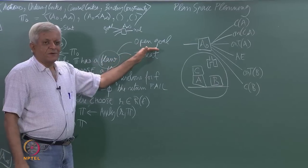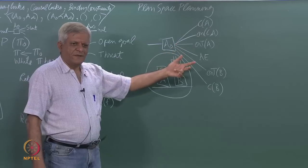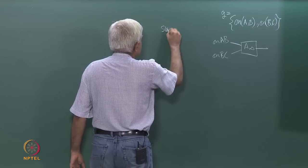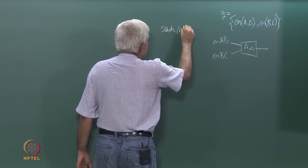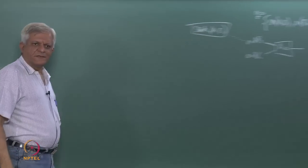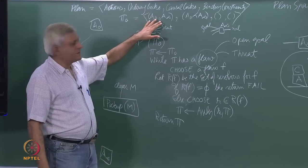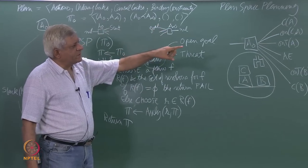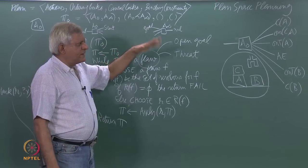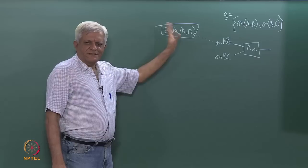For the open goal on(A,B) or on(B,C), there is no existing action which can supply these predicates, so we are compelled to add new actions — for example, stack(A,B) to supply on(A,B), establishing a causal link. To add an action, we add it to the set of actions, add a causal link from the new action to the predicate we are supporting, and insert ordering links. We might also add binding constraints such as x=A and y=B.